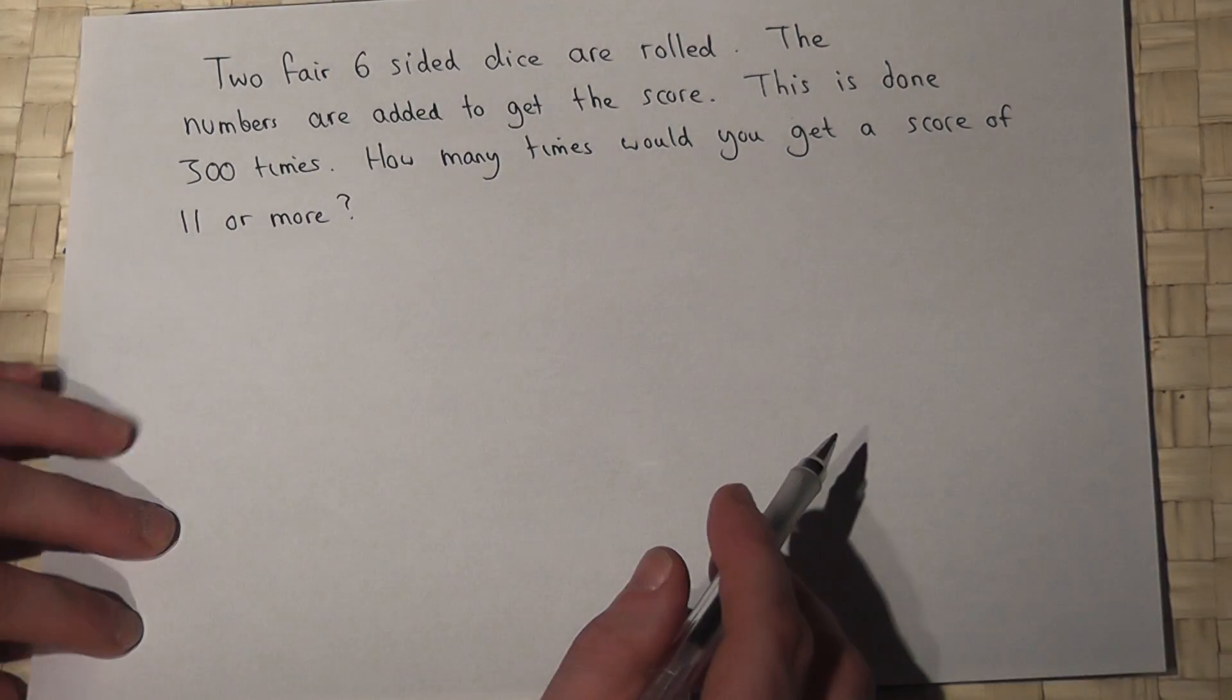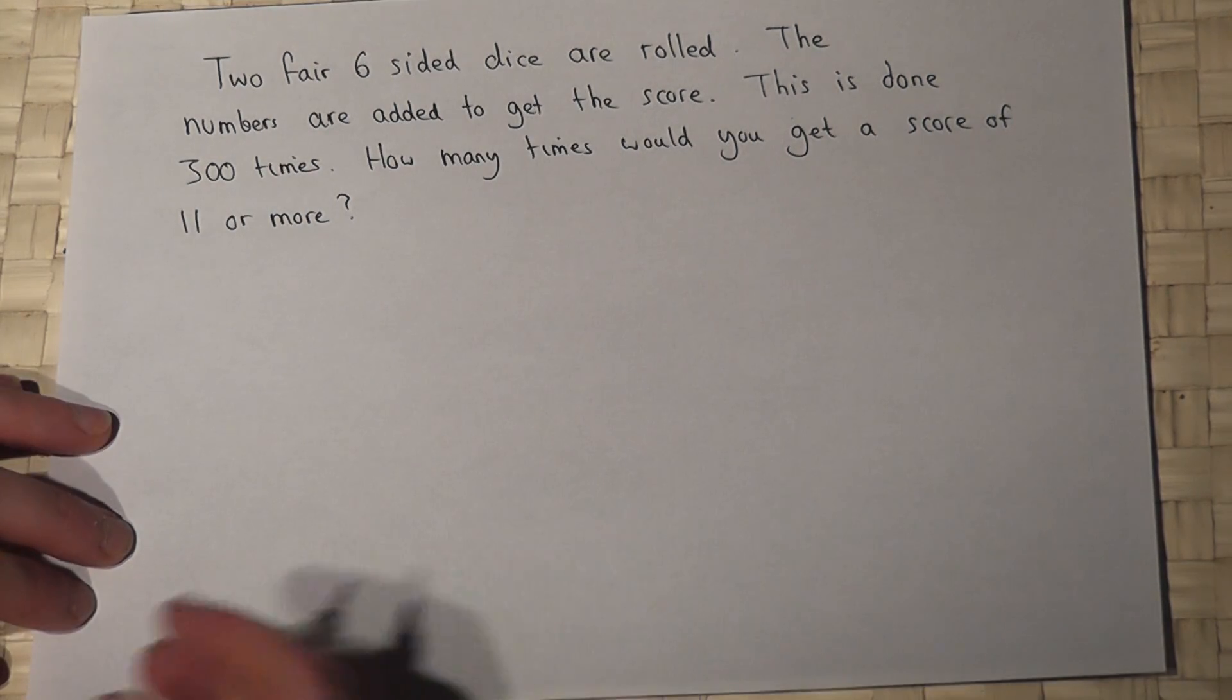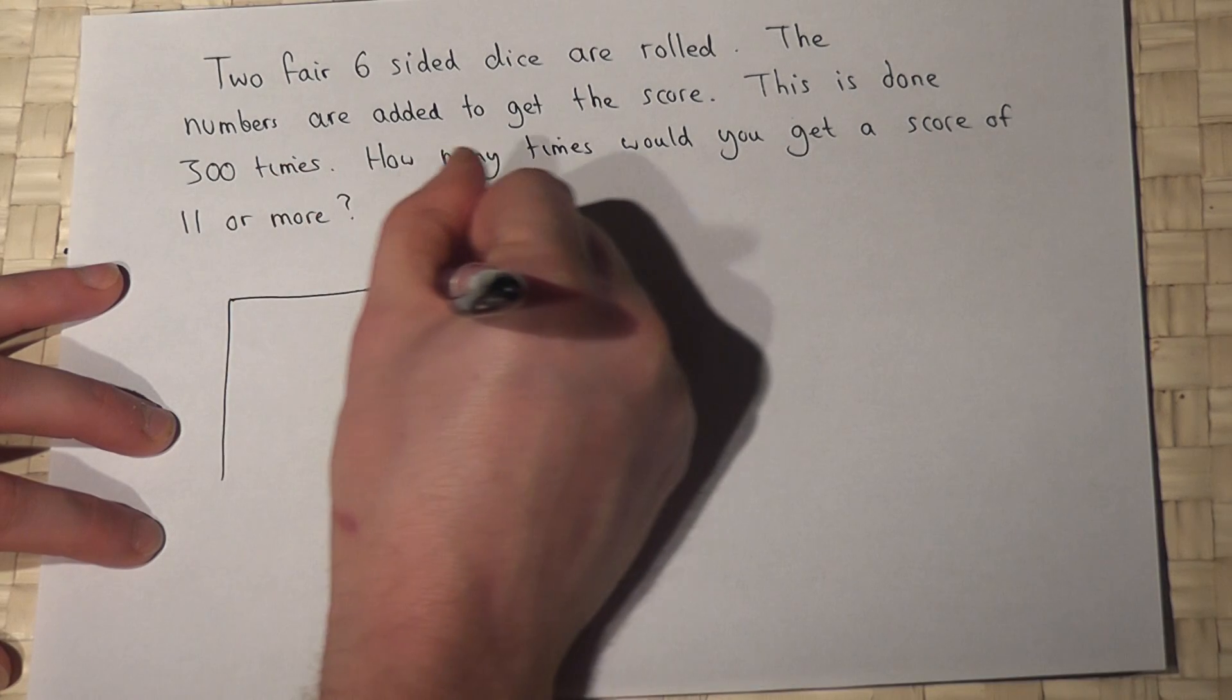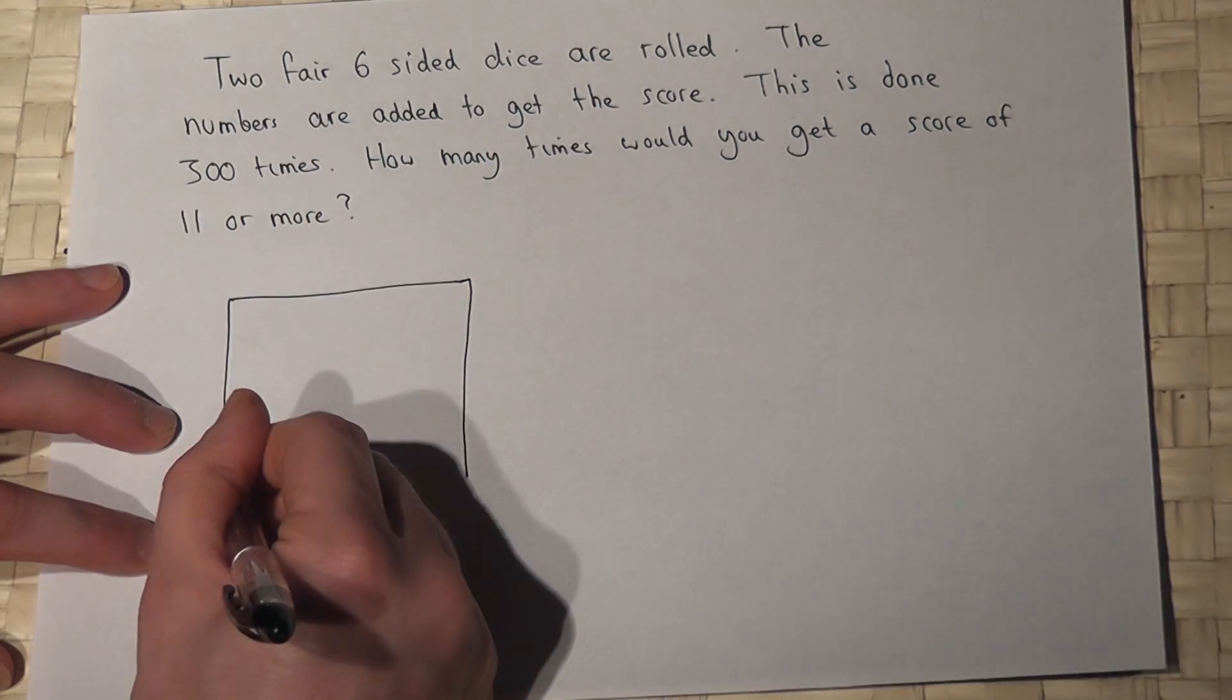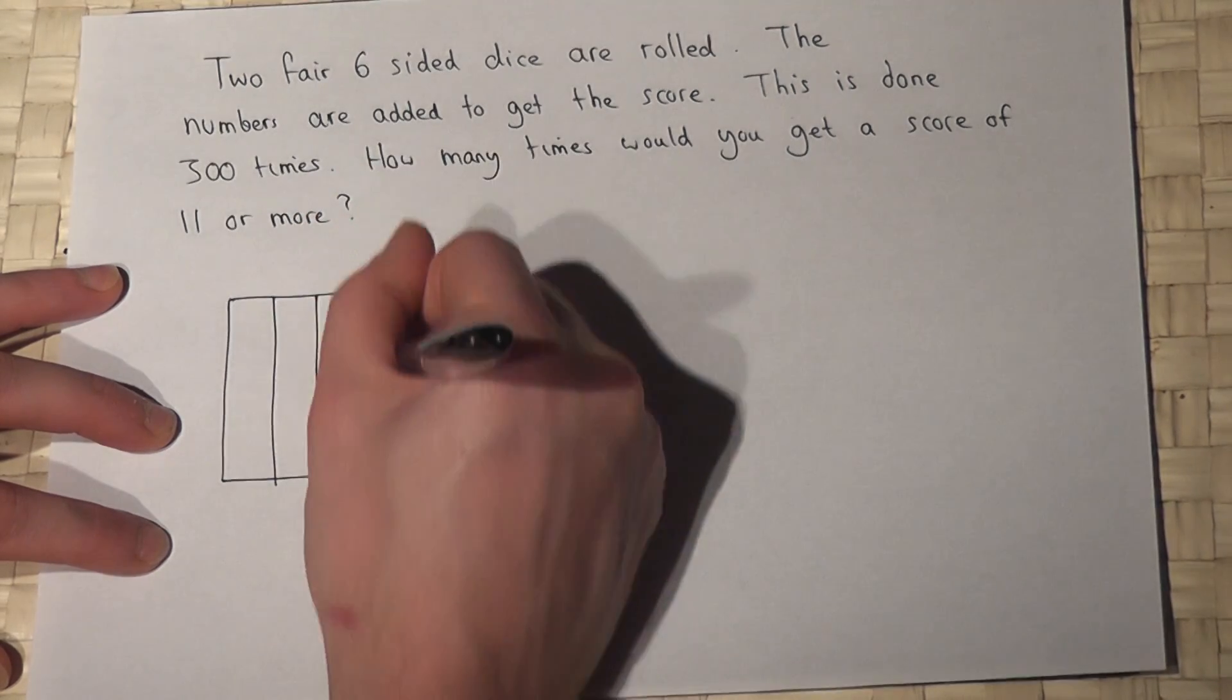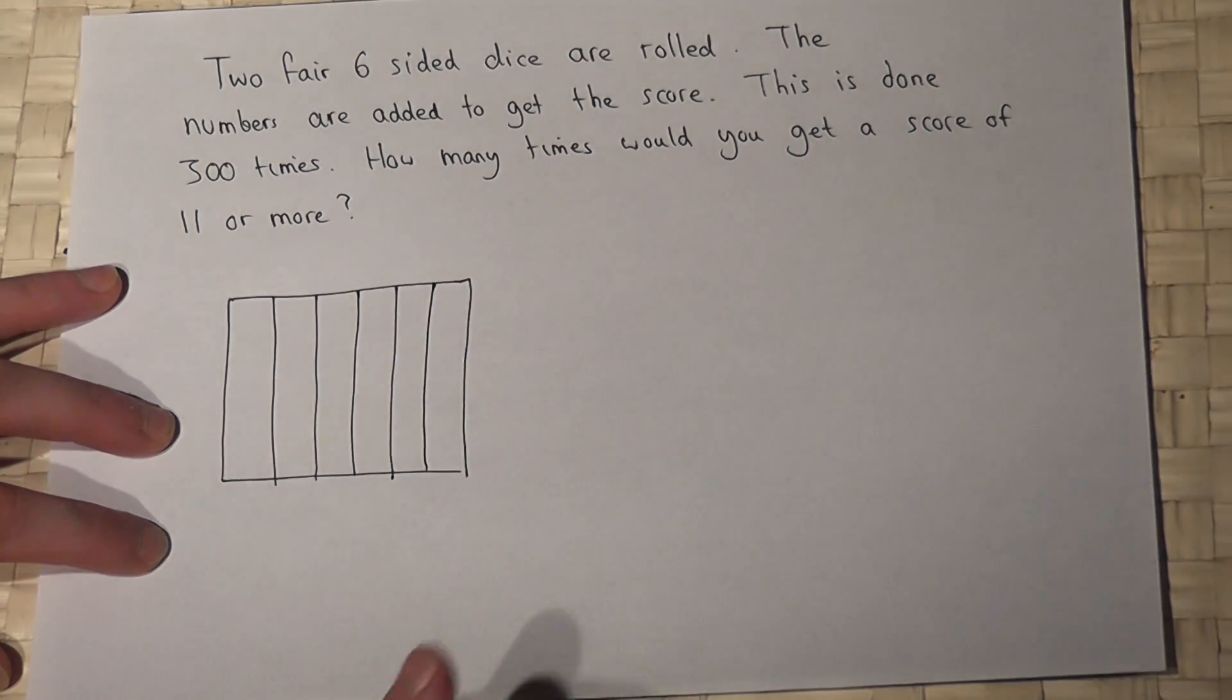Now when you're rolling two fair dice, the best way to approach it is using the table method. And if I draw a table like so, then I can list all the options you can get when you roll six-sided dice.